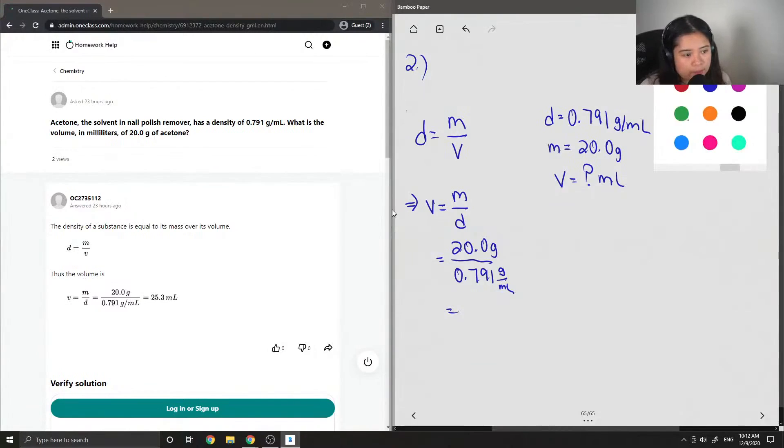And then you'll notice that the grams will cancel out, and our milliliters are now the main unit. And you should end up getting around 25.3 milliliters.